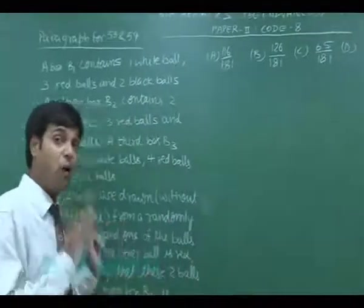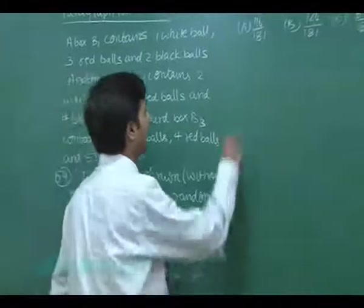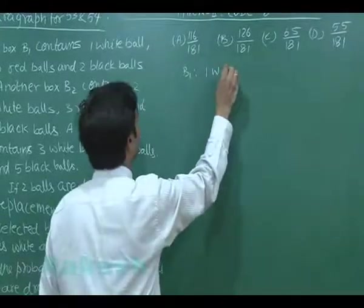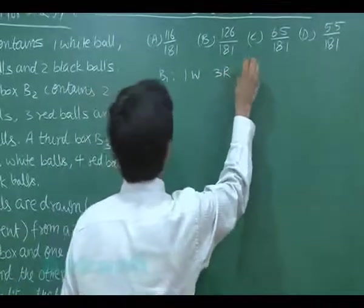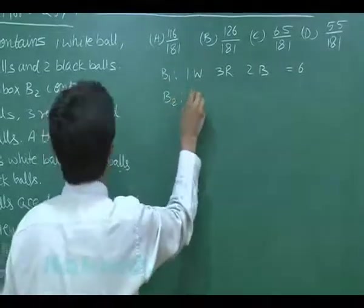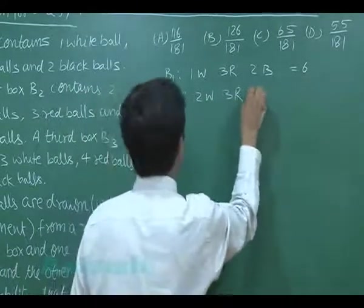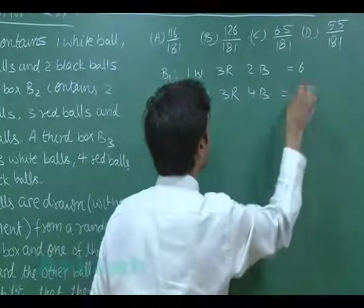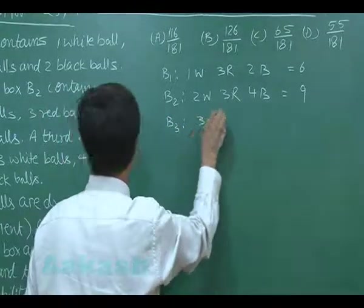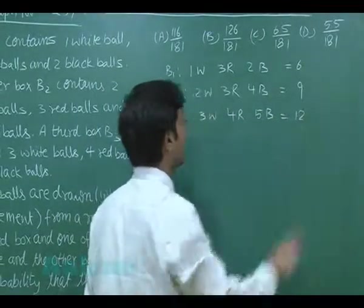The question is actually now talking about the Bayes theorem. Let us write the configuration again from the given data of the paragraph. Box 1, that is 1 white, 3 red, 2 black. Total number of balls were 6. Box 2, 2 white, 3 red and 4 black balls. Total number of balls 9. Box 3, 3 white, 4 red and 5 black. Total number of balls 12.